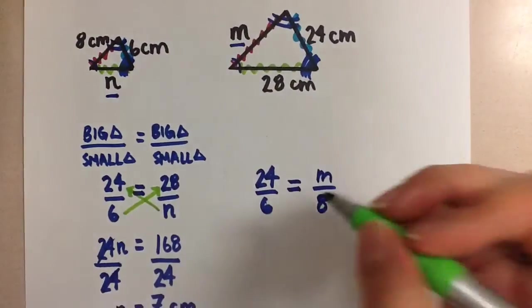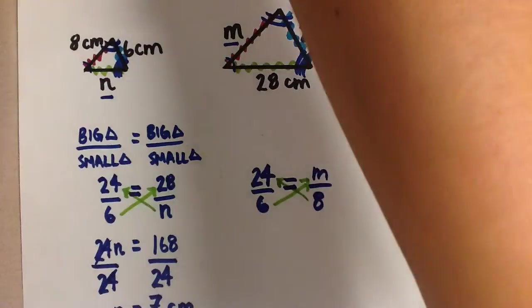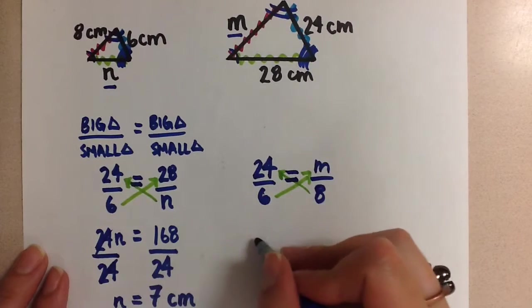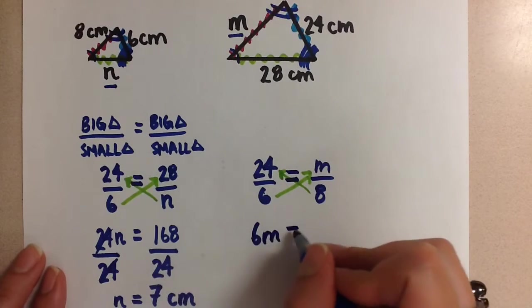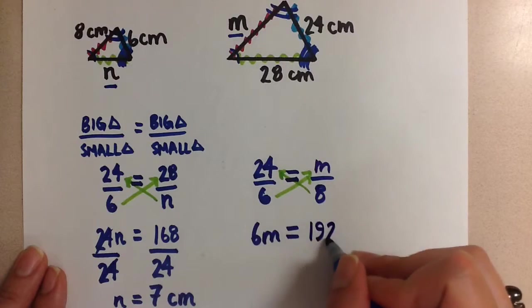Now we have a proportion that we need to solve. The easiest way for us to do that is to cross multiply first. 6 times m is 6m. And on the other side, we get 8 times 24, which is 192.